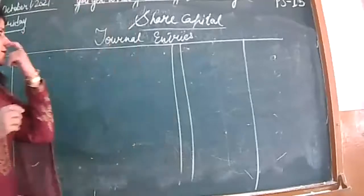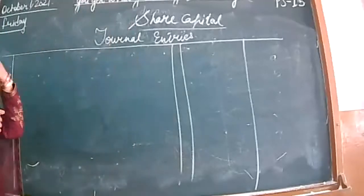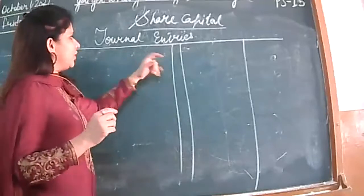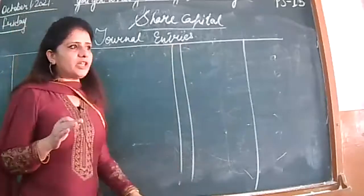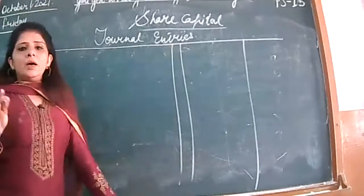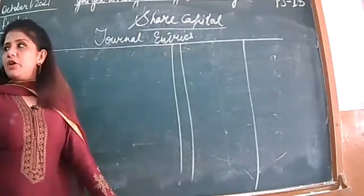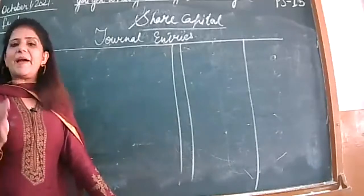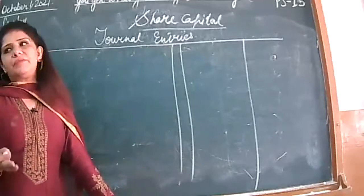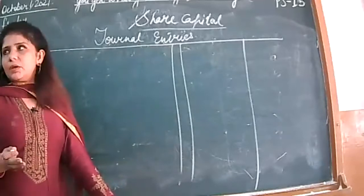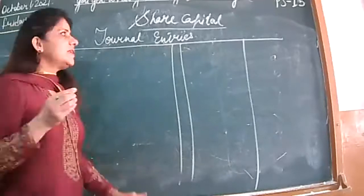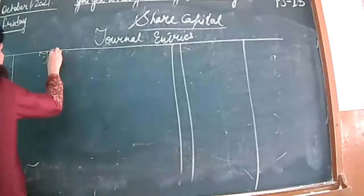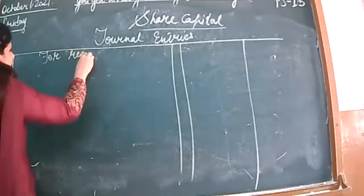I will keep a sequence in mind, as the company invites the public to apply. The question will give you all the entries. There are applications from the public. The first entry is the application money received. So the sequence of journal entries is: the first entry will always be for the receipt of application money.